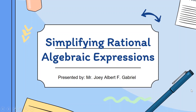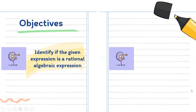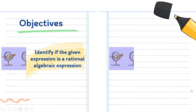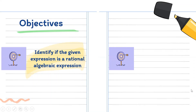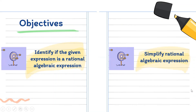What are the objectives for today's lesson? First, identify if the given expression is a rational algebraic expression. Second, simplify rational algebraic expressions.